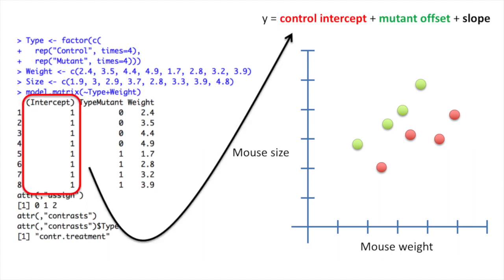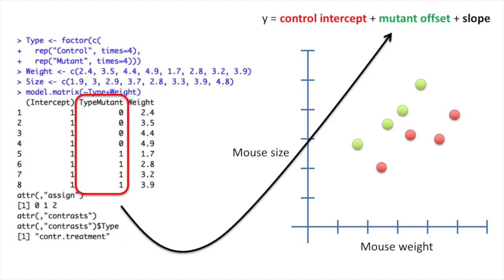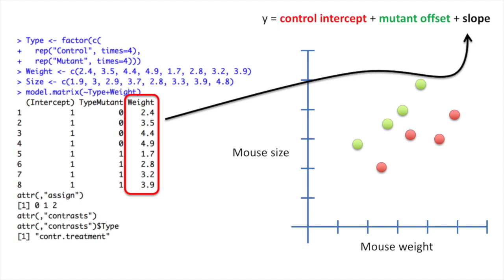The first column in the design matrix will be multiplied by the control intercept. In this case, the control intercept will be on for all of the measurements. The second column in the design matrix will be multiplied by the mutant offset. In this case, only the mutant values will turn the mutant offset on. The last column in the design matrix will be multiplied by the slope.